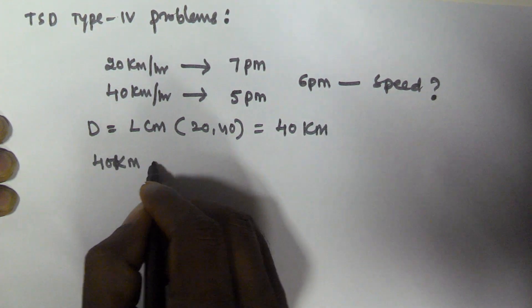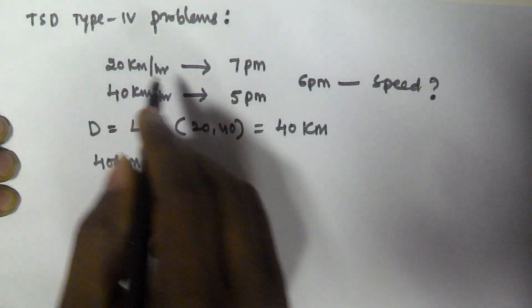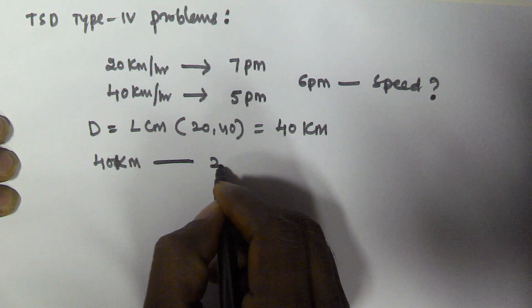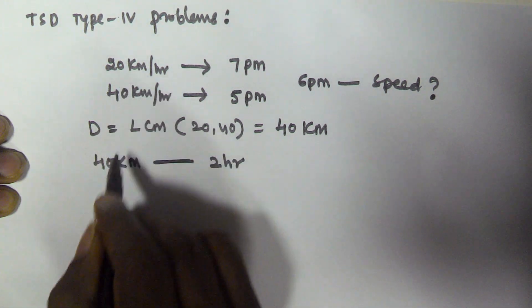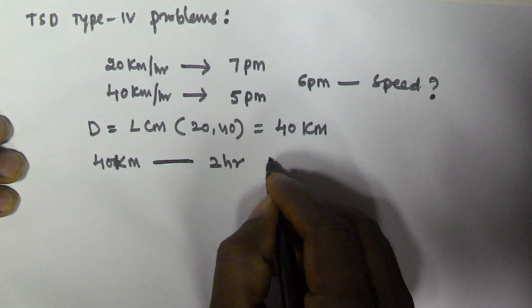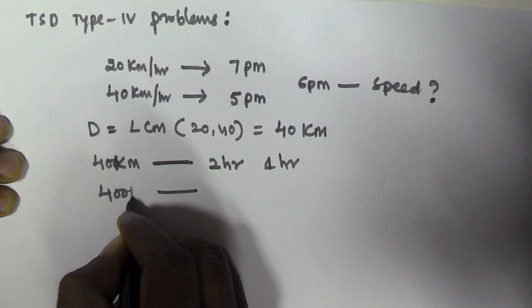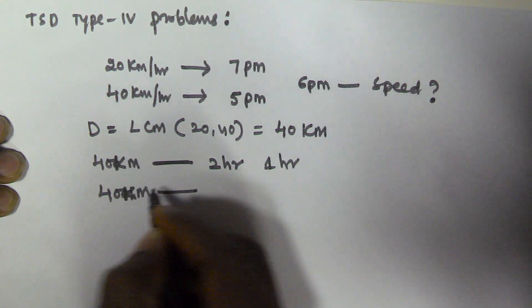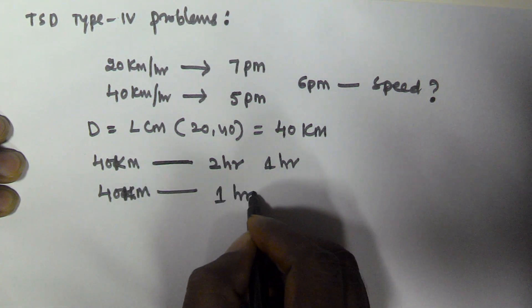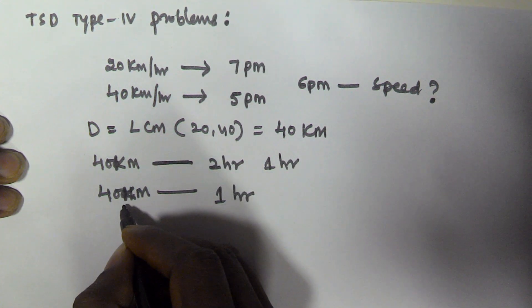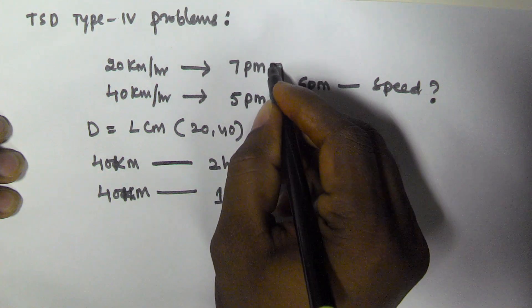If distance is 40 km and on the first day he is travelling with 20 km per hour, that means he takes 2 hours. On the second day he is travelling with 40 km per hour and the distance is 40 km, so he will take 1 hour. So the difference between 2 hours and 1 hour is 1 hour. So 1 hour corresponds to 40 km.